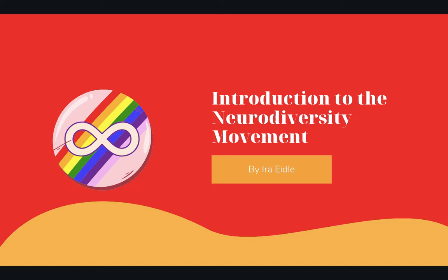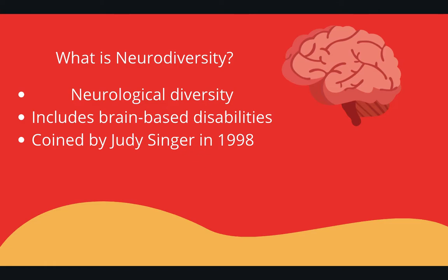Before I get into the actual history, I'd like to go over some basic things first. What is neurodiversity? Neurodiversity is short for neurological diversity. It's a similar concept to biodiversity in that there are a lot of different living organisms on this planet. With neurodiversity, it says that brain-based disabilities like autism, ADHD, Tourette's, etc., are natural variations of the human brain. The term itself was coined by Australian autistic sociologist Judy Singer in her master's thesis in 1998.